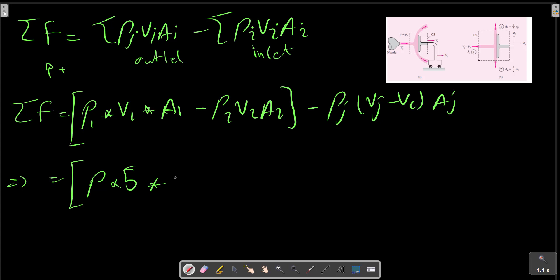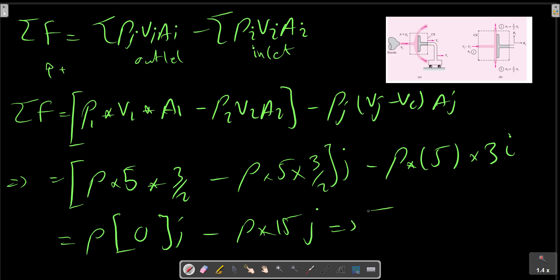So with ρ, V1 equals 5, A1 equals A2 equals 3/2 cm², we have ρ(5)(3/2) minus ρ(5)(3/2) in J direction minus ρ(VJ minus VC)(3) in I direction, which gives 0J minus ρ(15)(3) in I direction.